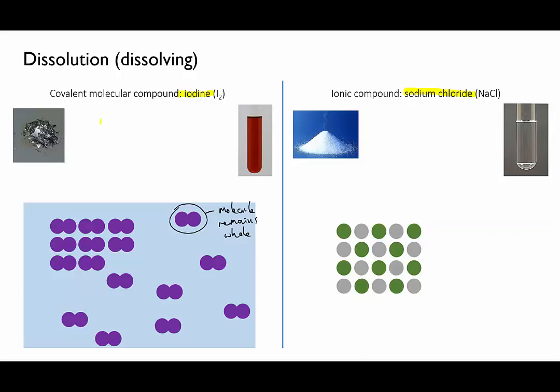At a symbolic level we could represent this process using an equation like this, where the subscripts here indicate the change in state from solid to aqueous. Notice that the formula of the substance doesn't change, it's still I2. All that has changed is essentially the surroundings of each molecule.